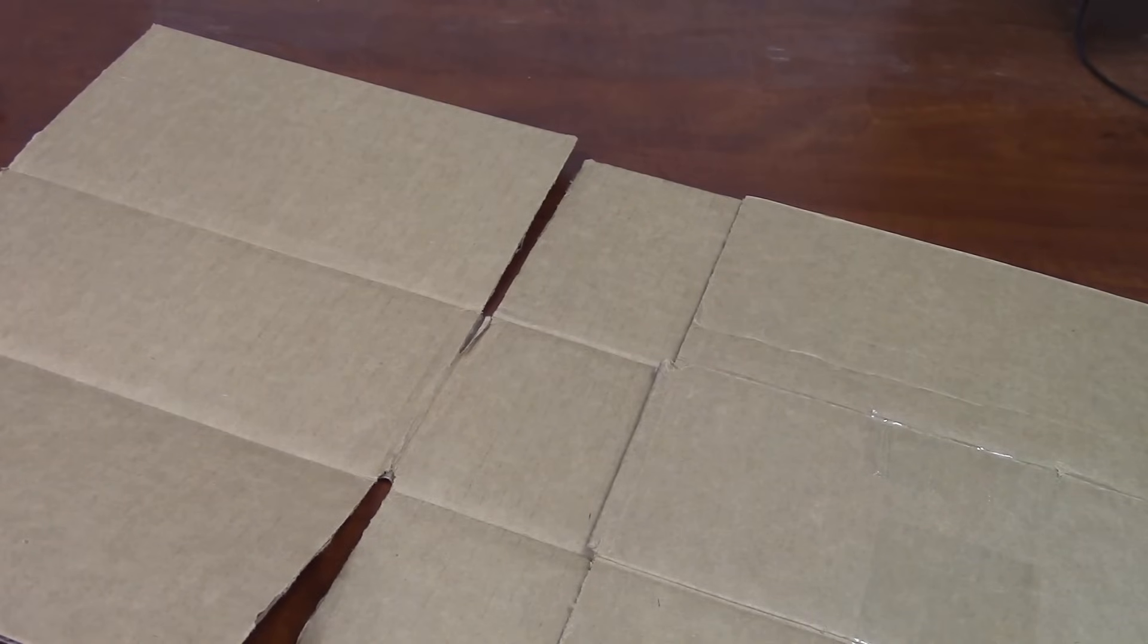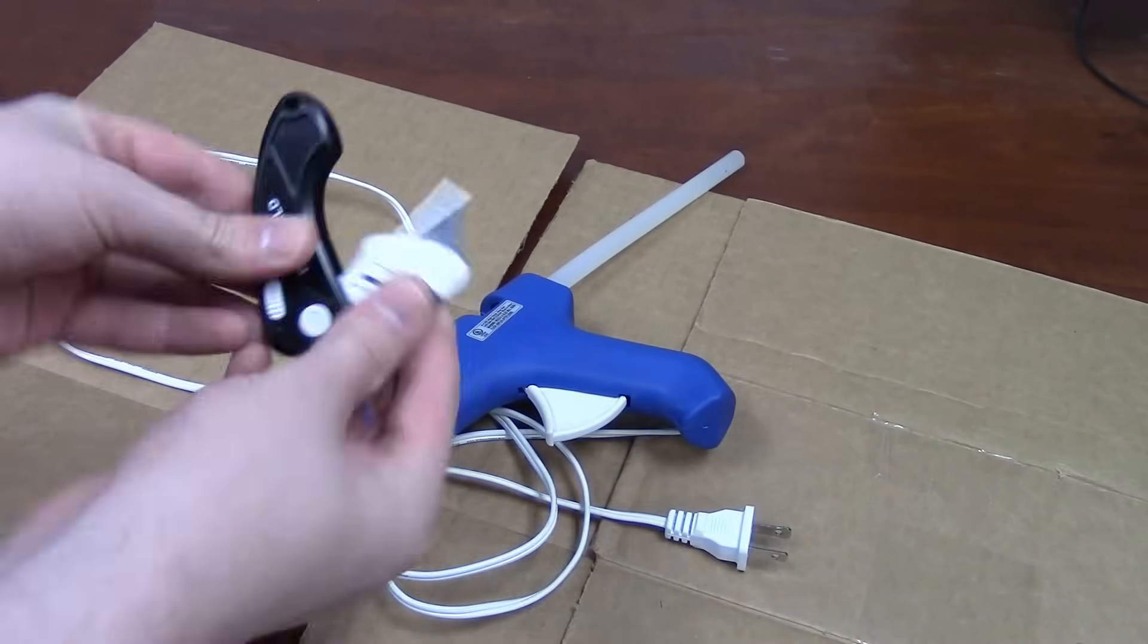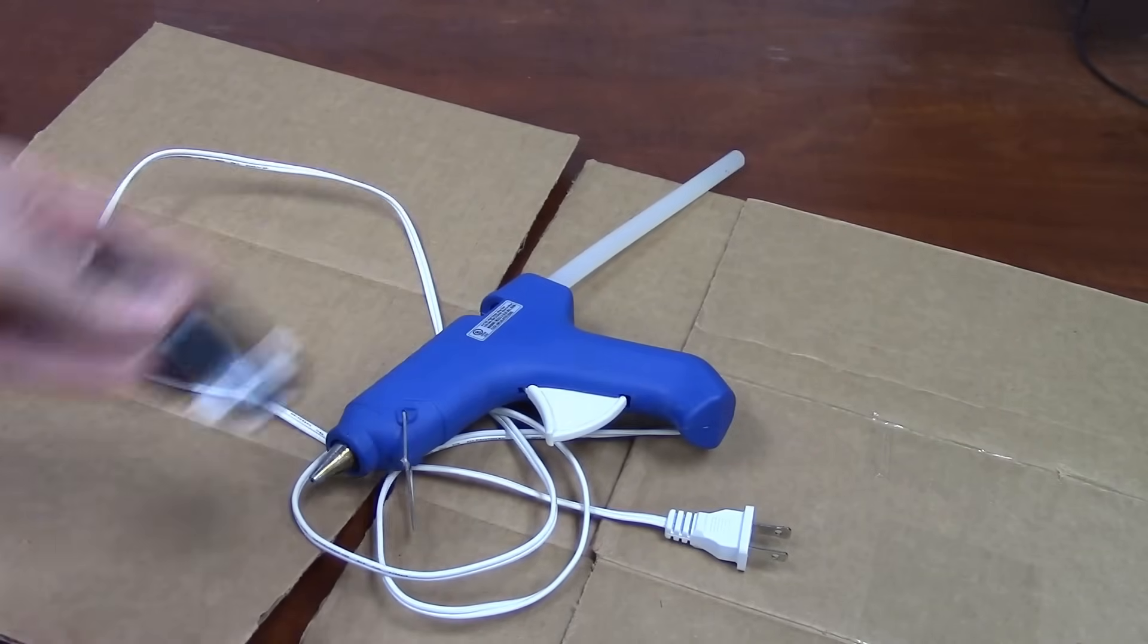Today I'm going to be showing you how to make an animatronic hand using cardboard and a CD drive. For this tutorial you will need some cardboard, a glue gun, a razor blade or cutting tool.